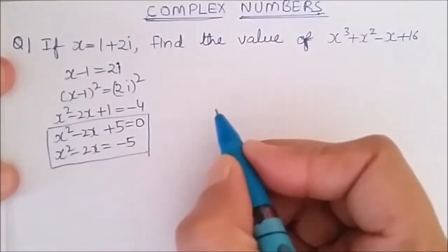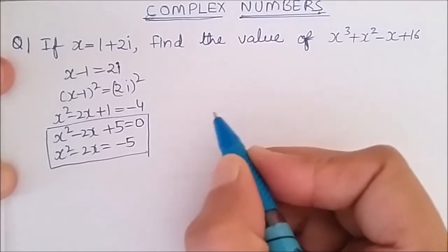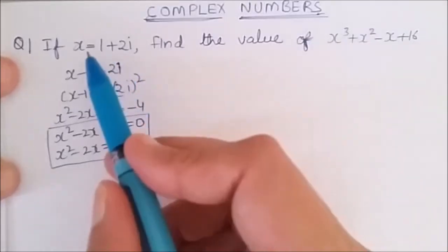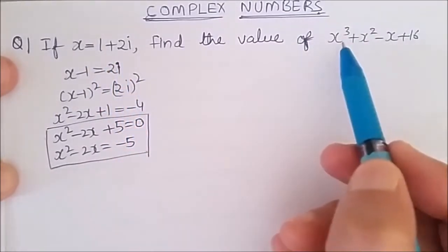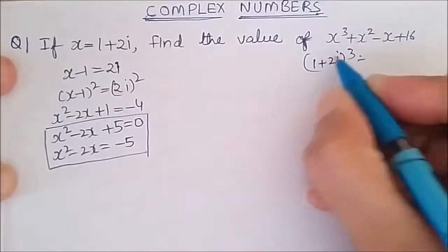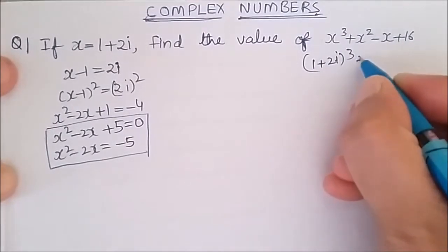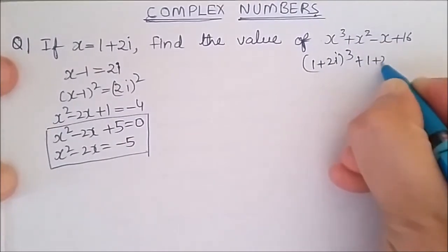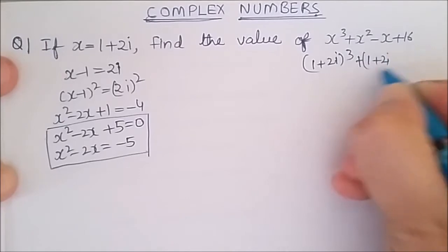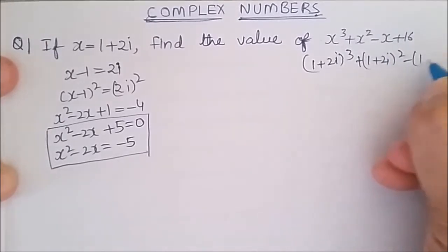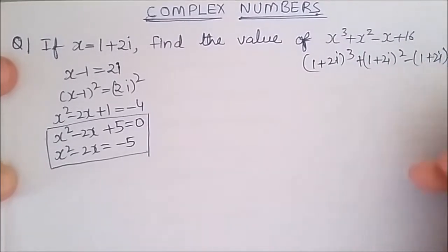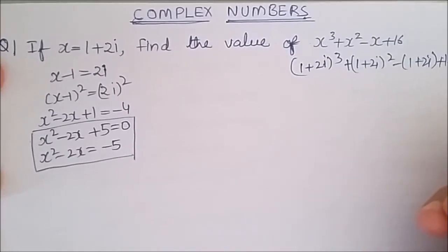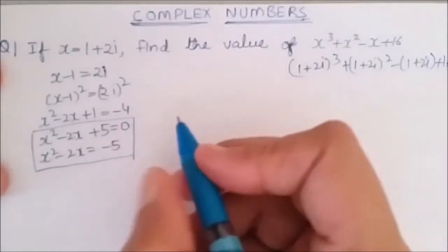This is the easiest, fastest, and quickest way. Another way is to directly substitute the value of 1 plus 2 iota into the equation — computing 1 plus 2 iota whole cube, then 1 plus 2 iota whole square, then minus 1 plus 2 iota plus 16 — but this will be very lengthy. So let us use this algebraic method instead.